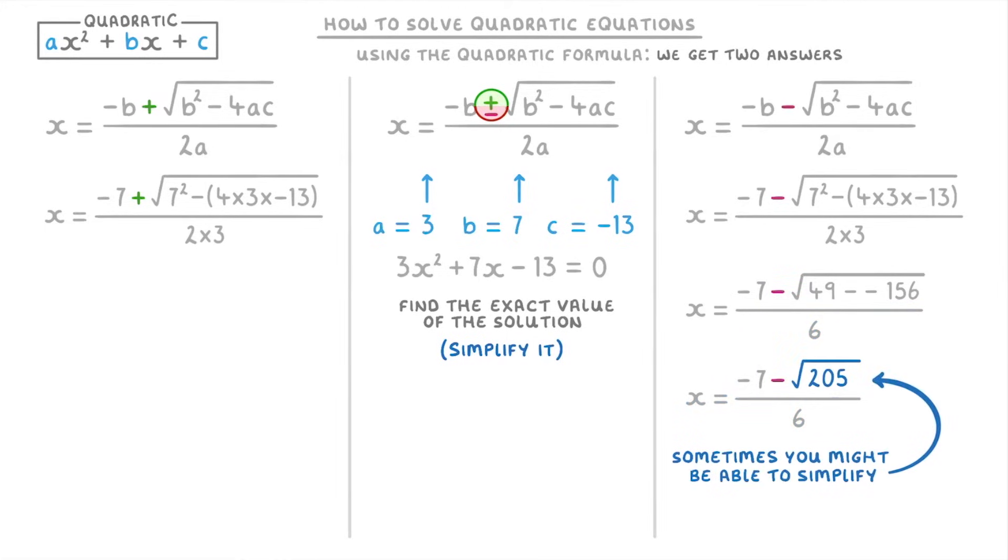Sometimes you might be able to simplify down the root. But in this case we can't. So this is the most simple it can go. And we'd leave our answer like this. And for the positive version of the equation on the left, our answer would be almost the same except it would change the minus sign to a plus sign. So we'd get -7 + √205 over 6.